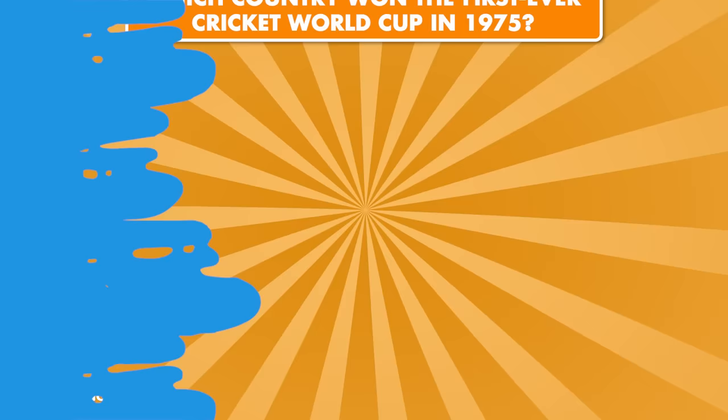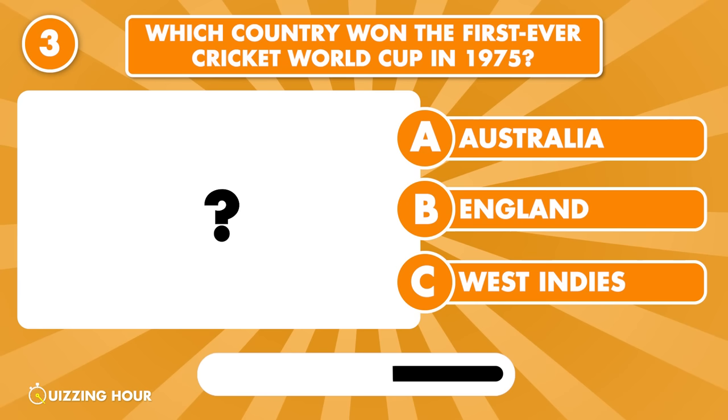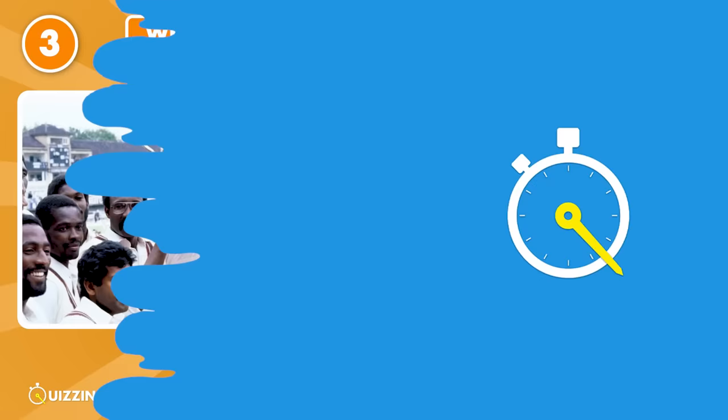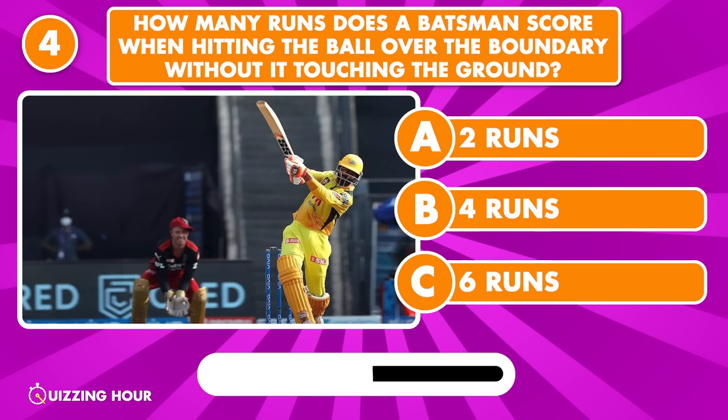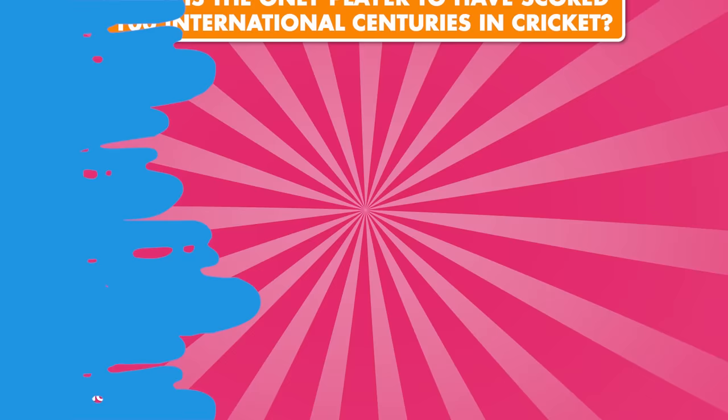Which country won the first ever Cricket World Cup in 1975? West Indies. How many runs does a batsman score when hitting the ball over the boundary without it touching the ground? Six runs.